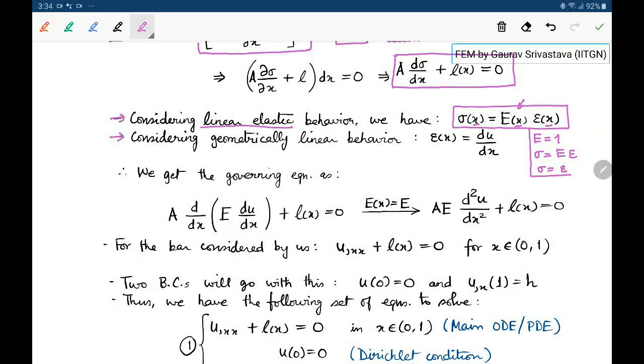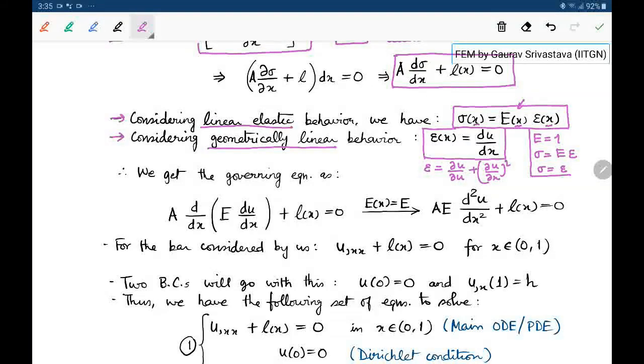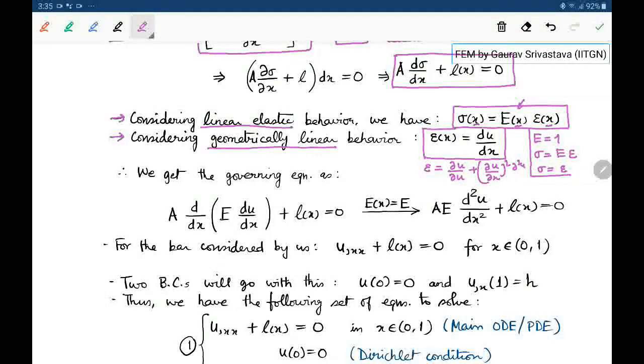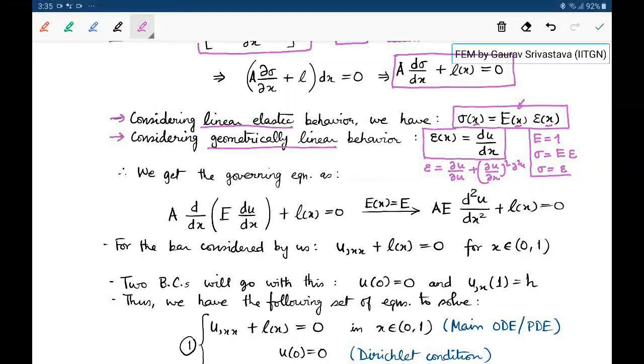Next we will make one more assumption that this system behaves geometrically linearly. What it means is that the strain displacement relation is linear. And you may recall from your basic mechanics of solids background that this strain in general does not only have this linear term, it also has the square terms or higher order terms. In this case, we will assume that this is geometrically linear.